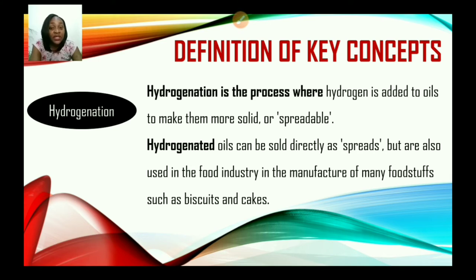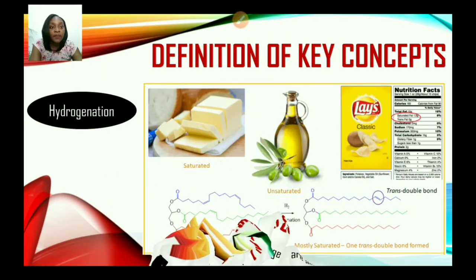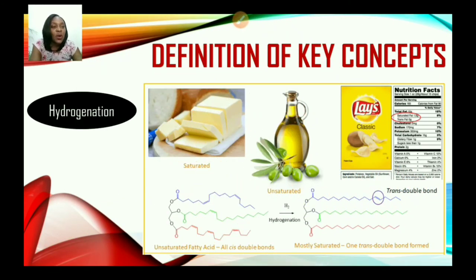In the case of margarine, remember that plant oils are normally liquid at room temperature, with the exception of palm oil and coconut oil. In order to produce a more solid type of plant-source fat or oils, hydrogen is added during the manufacturing process to change the texture of the oil. Now let us look at how this is done.